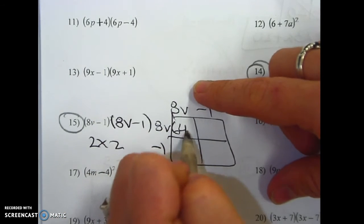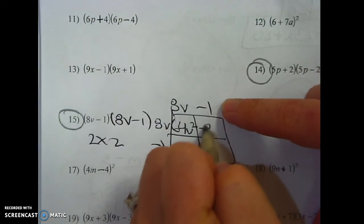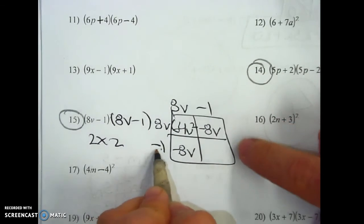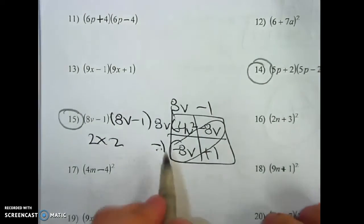8 times 8 is 64. VV is V squared. 8 times negative 1 is negative 8V. It's special, so these are exactly the same. And then a negative times a negative is a positive. Add those together. Bring this down.